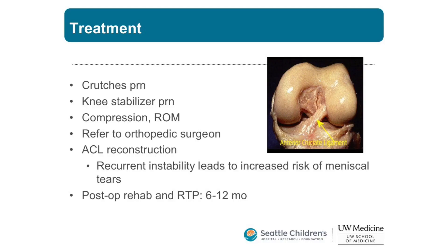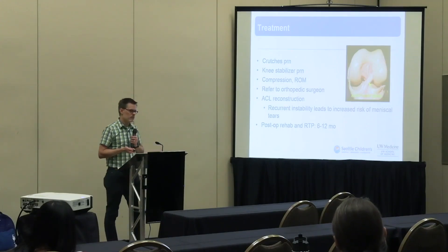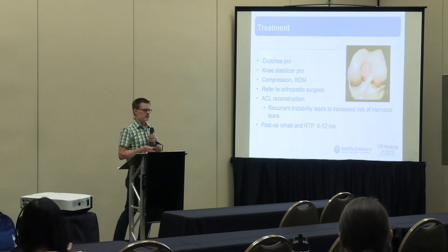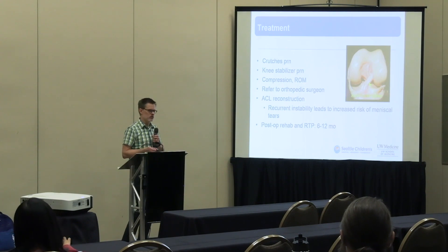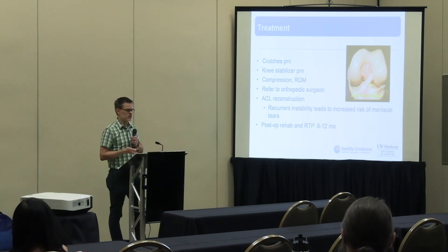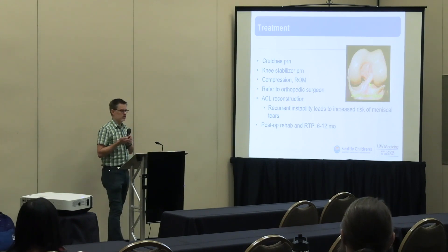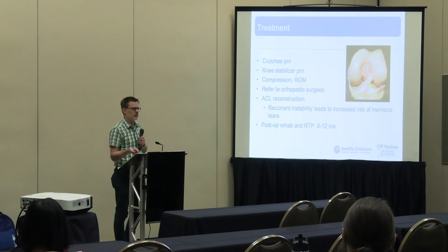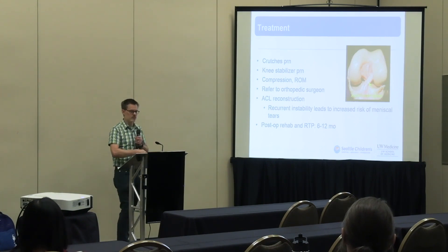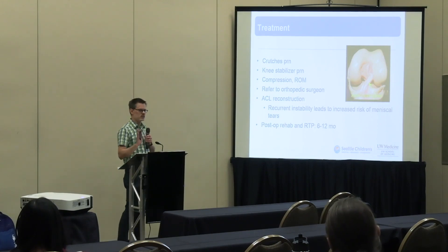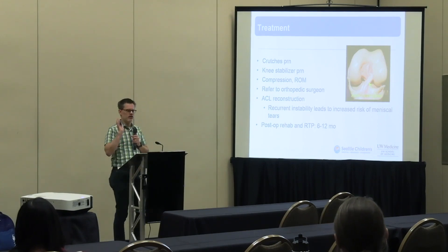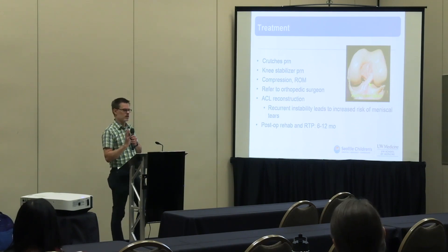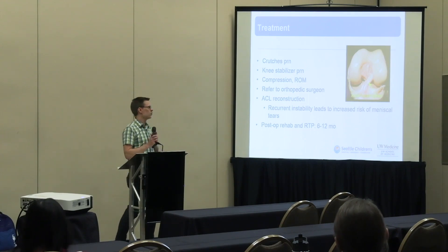Treatment for ACL in the acute phase: crutches as needed. If it feels like it's going to give out while walking, a hinged knee brace might help. I don't often use a knee immobilizer because it causes quad inhibition quickly, and getting quad strength back is a major part of knee rehab. If there's a fracture, by all means use an immobilizer — it's cheap and easy — but as a short-term temporizing measure only.